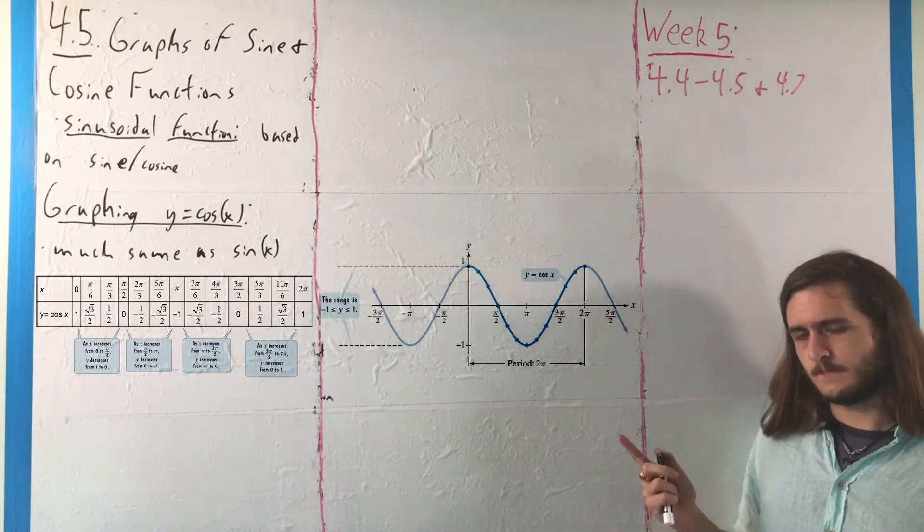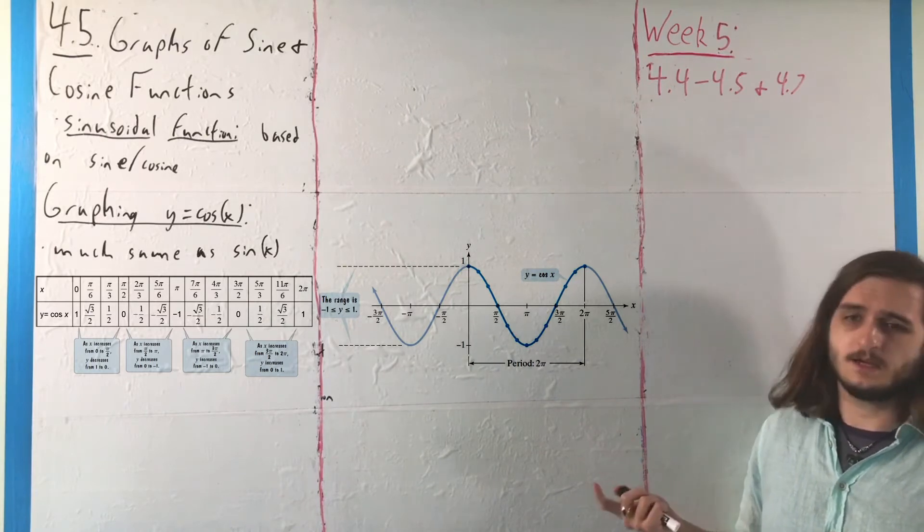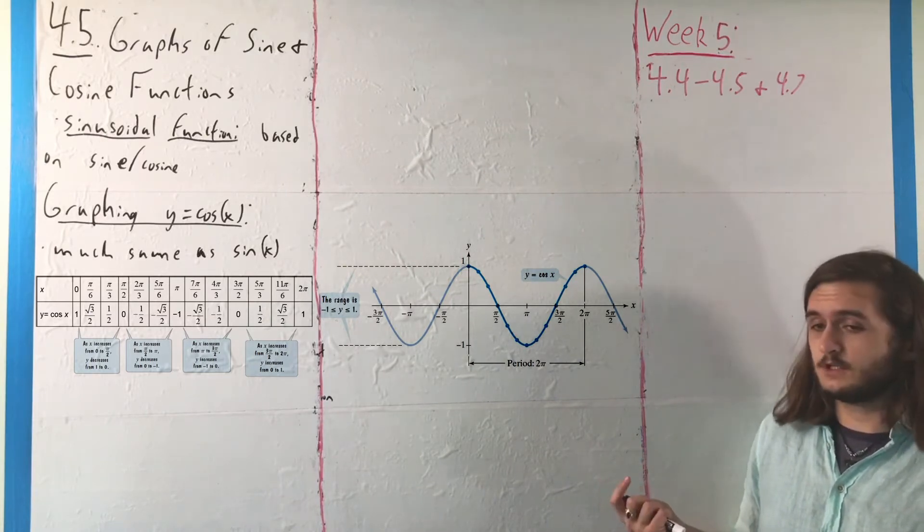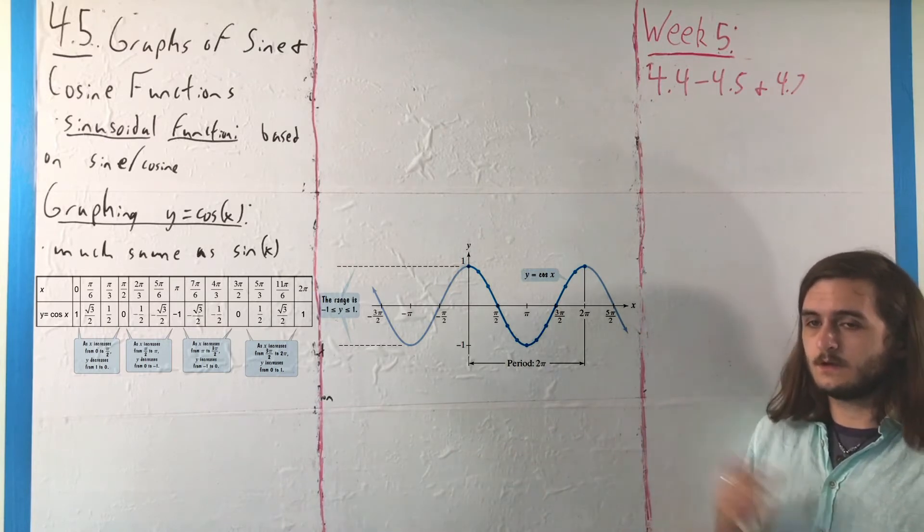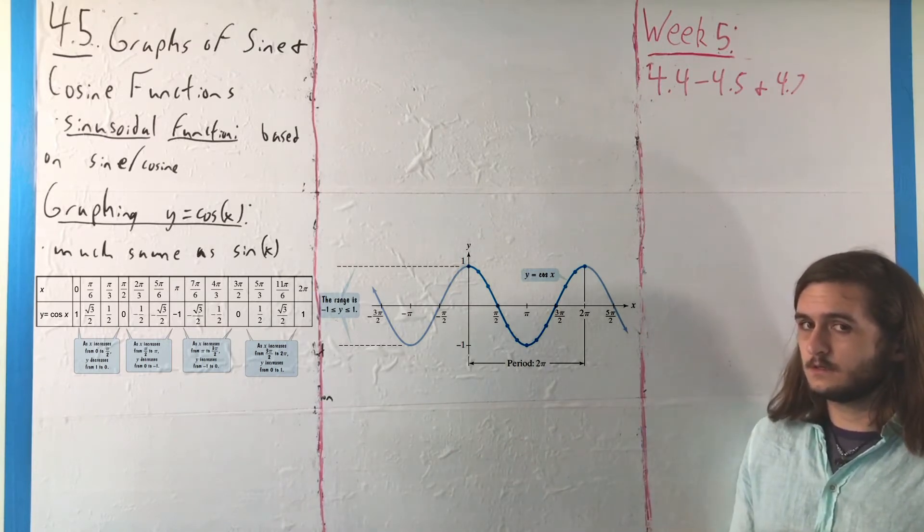The big difference we'll see here is the cosine function and the sine function have essentially the same behavior. It's just that cosine is phase shifted a little bit to the right,